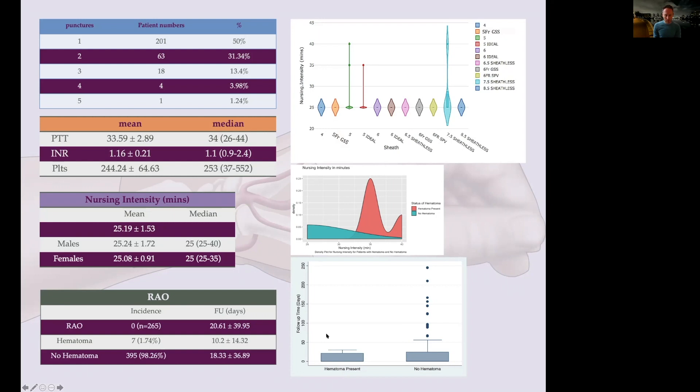No radial artery occlusions up to a mean of 20 days post, and as you know, the highest rate of radial artery occlusion is immediately post procedure. So at 20 days, if you're not seeing an occlusion, it is very, very unlikely that these patients spontaneously thrombose that far out. Again, one of the huge benefits in the study—the nursing intensity.